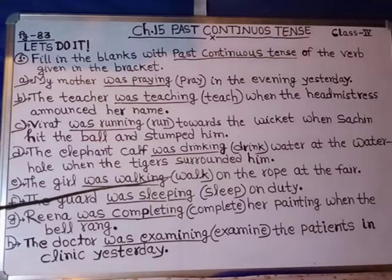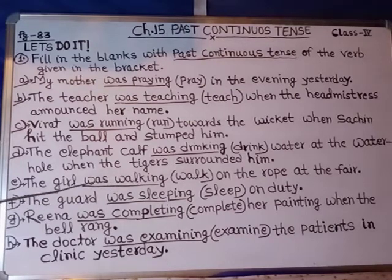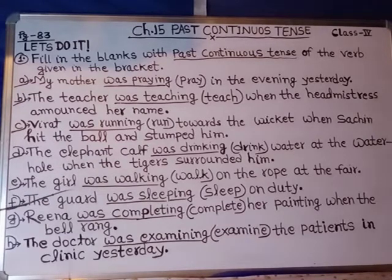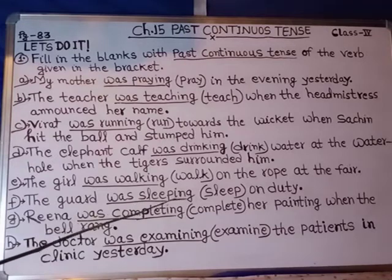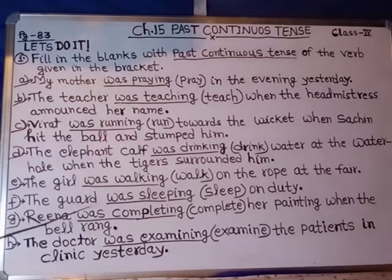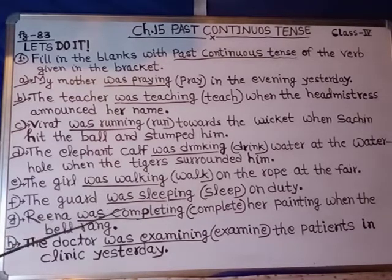E: The girl was walking on the road at the fair. We took the verb 'walk', added ing, and used 'was' because we are speaking of one girl, which is singular. F: The guard was sleeping on duty. With 'sleep' we added ing and used 'was' because guard is singular. The answer is: was sleeping.